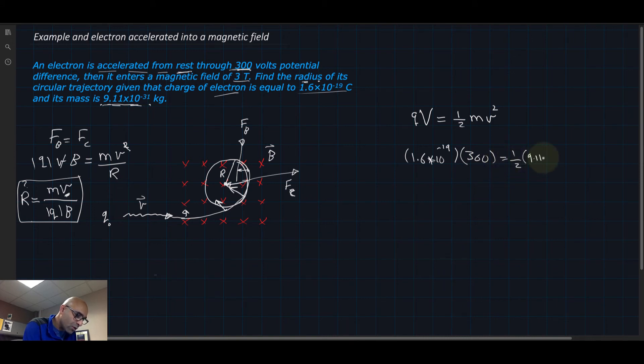The velocity is the only thing that is unknown. Solving for the velocity v, that will give us an answer of 1.03 times 10^7 meters per second. That's a huge velocity, but that's okay—electrons can go that fast if needed.